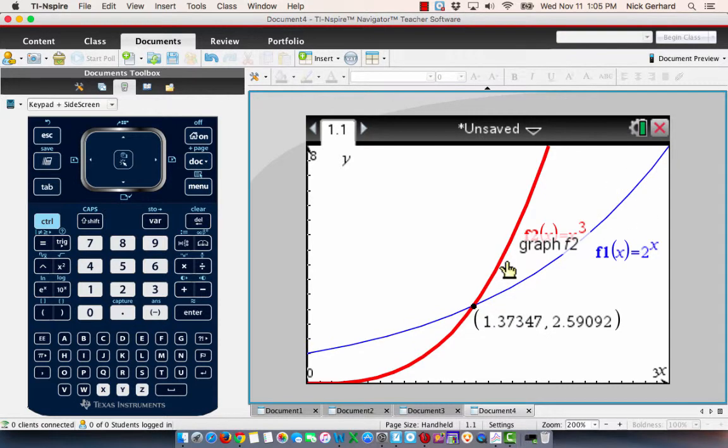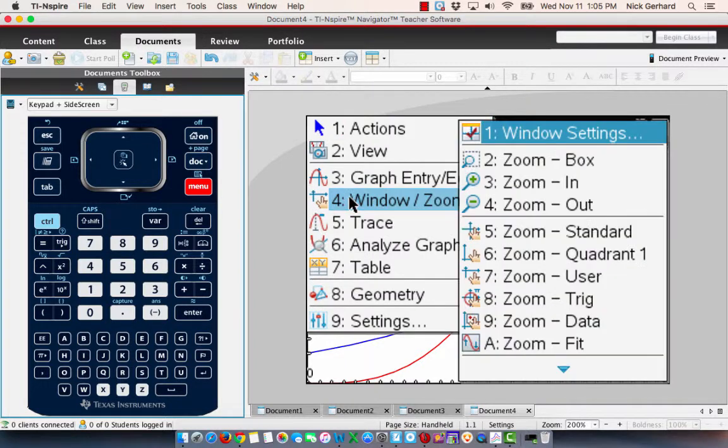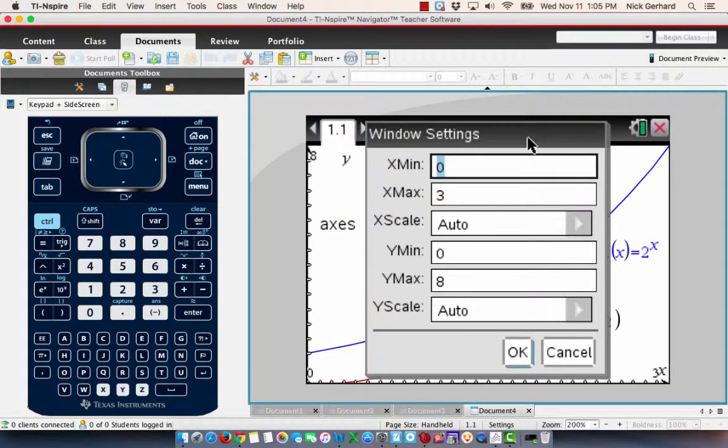Now, if this were to continue on, then so be it. But, we're looking at just a small part of the graph. And so, what I want to do is I want to look at even a bigger window. So, I'm going to go ahead and I'm going to change the window here. Go to window settings again. And instead of 0 to 3, I'm going to go 0 to 6 and 0 to 25 on the y.